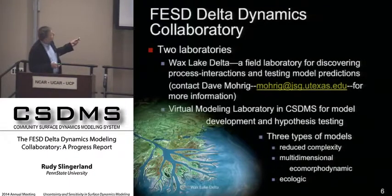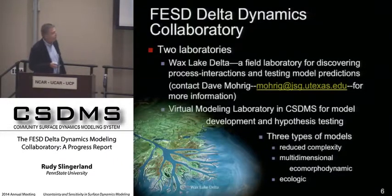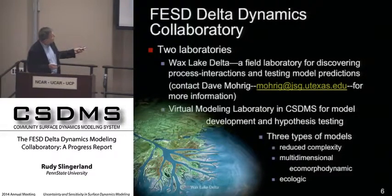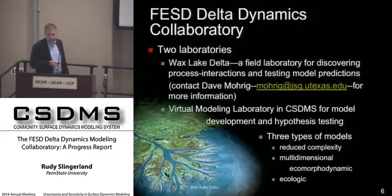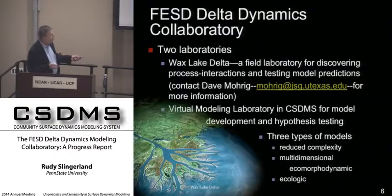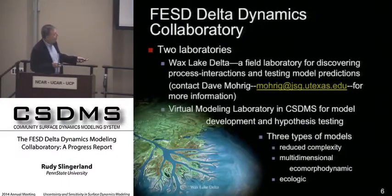The second laboratory is a virtual modeling laboratory, notionally housed here at the systems facility. The group of us interested in advancing these models for hypothesis testing are trying to use the Wax Lake data and interact with our collaborators there, although telling them what kind of data you want and what you get is of course a very different thing. I'll tell you about three kinds of models under development: reduced complexity models, a multidimensional echomorphodynamic model — basically a DEL 3D successor — and ecologic models, of which there are two at the moment.